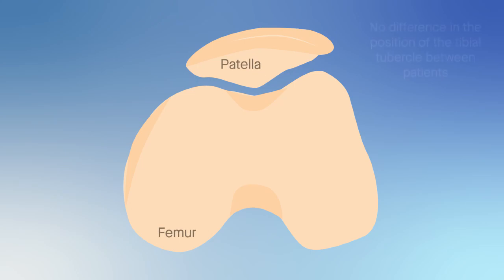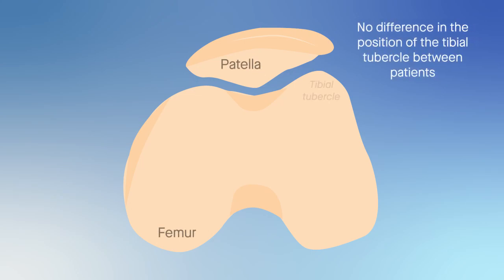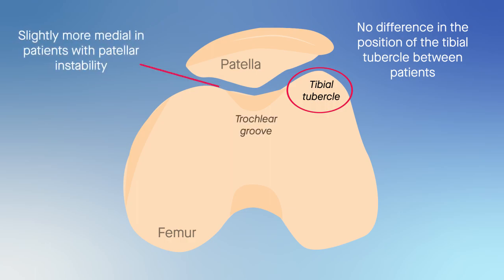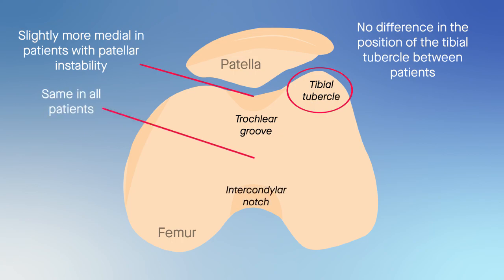The team also found no difference in the position of the tibial tubercle between patients with and without patellar instability, and the trochlear groove was slightly more medial at the top of the trochlea, but was basically the same at the bottom of the trochlea, close to the intercondylar notch.